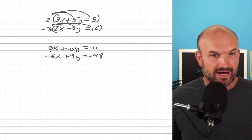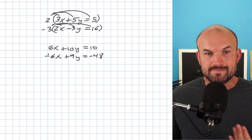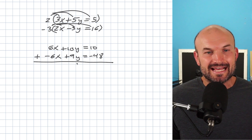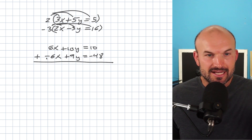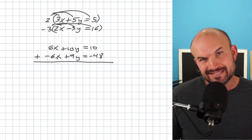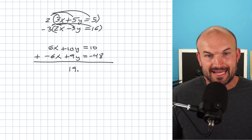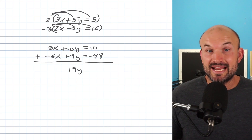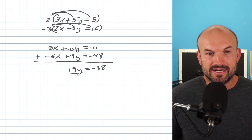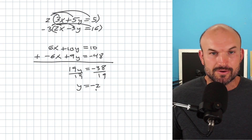Now you can see I have exactly what I want — coefficients for the x's that are the same: one positive, one negative. I can simply add them up since they are vertically aligned. So 6x plus negative 6x is zero. 10y plus 9y is 19y, and 10 plus negative 48 equals negative 38. I can solve for y by dividing by 19 on both sides, giving y equals negative 2.